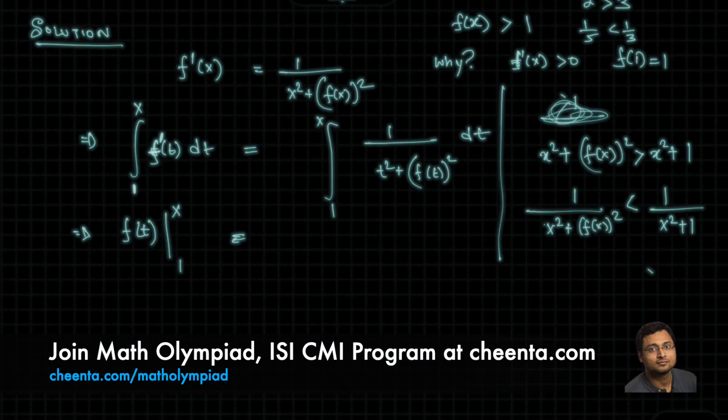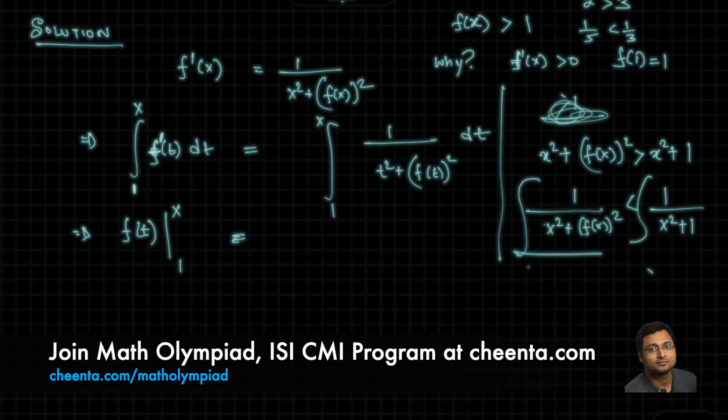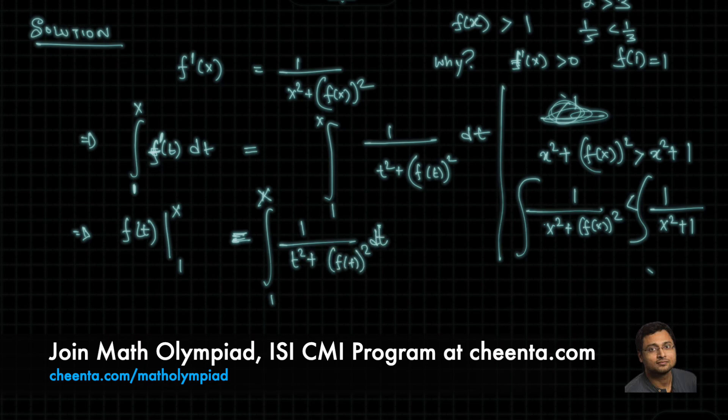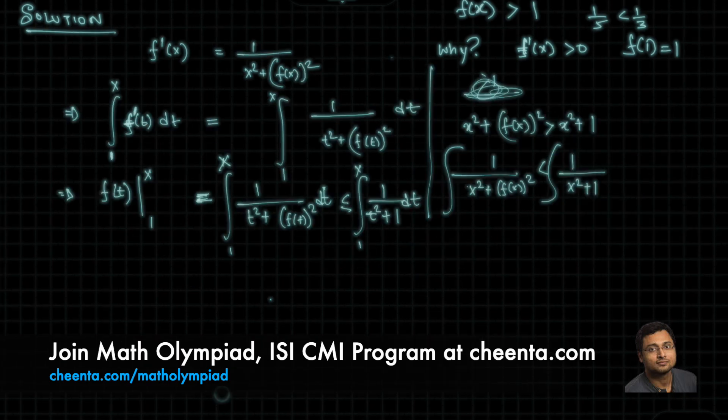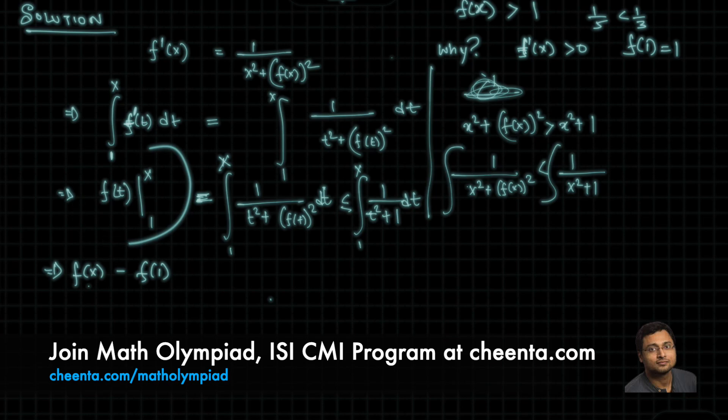Okay, now we know that if we integrate it, then this inequality will stay as it is. So, we now have the luxury of doing an inequality using the integration. So, this expression is less than or equal to integral from 1 to x 1 by t square plus 1 dt. I just replaced f of t by 1. That's what I did. So, now this one becomes f of x minus f of 1, this left hand part, and the right hand part becomes tan inverse x minus tan inverse 1.